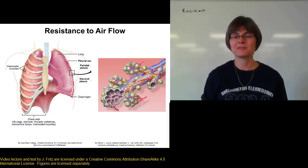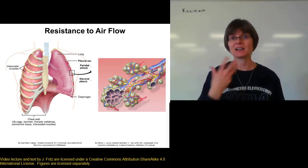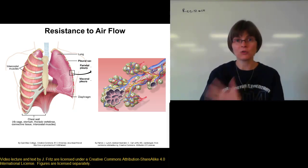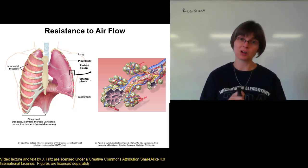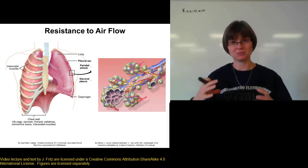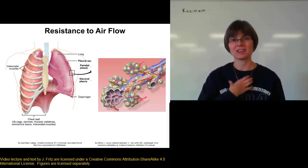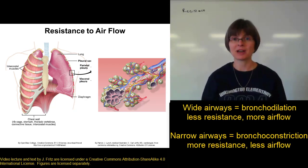Resistance is affected by a number of factors, but one of the main ones is diameter — the same factor that affected resistance to blood flow through blood vessels. We had more resistance in smaller blood vessels and less in bigger ones, and we see the same thing in the air passages of the lungs. Wider air passages give lower resistance; narrower air passages give higher resistance.